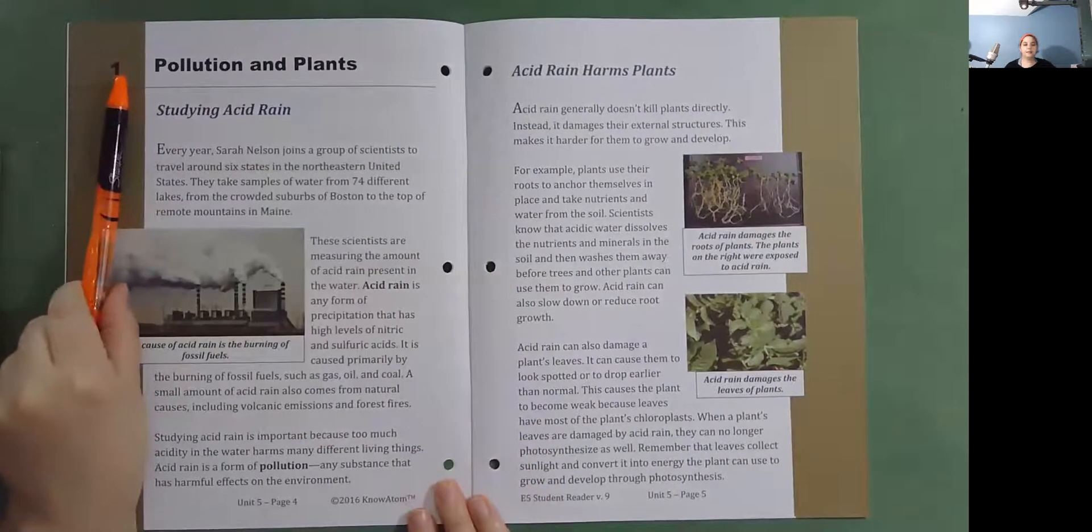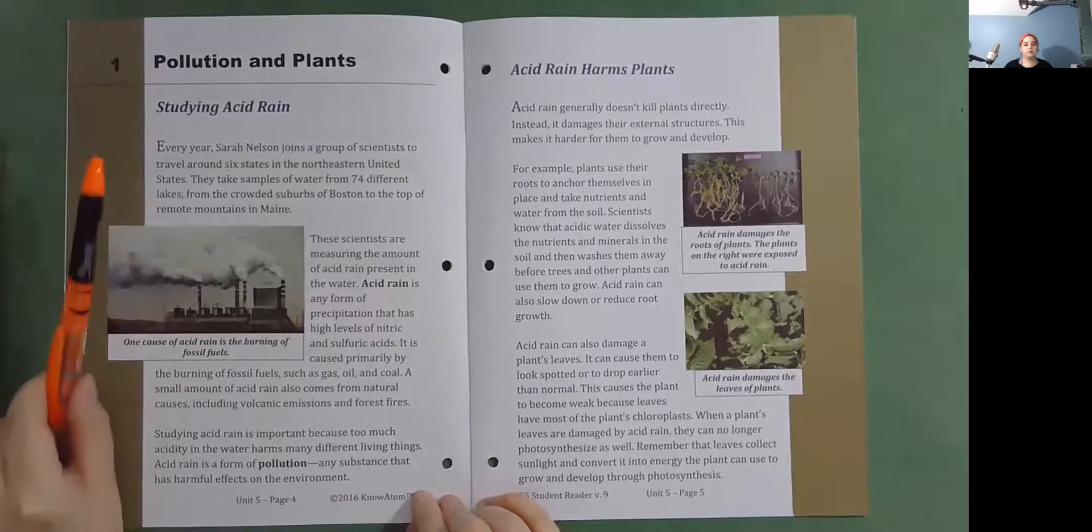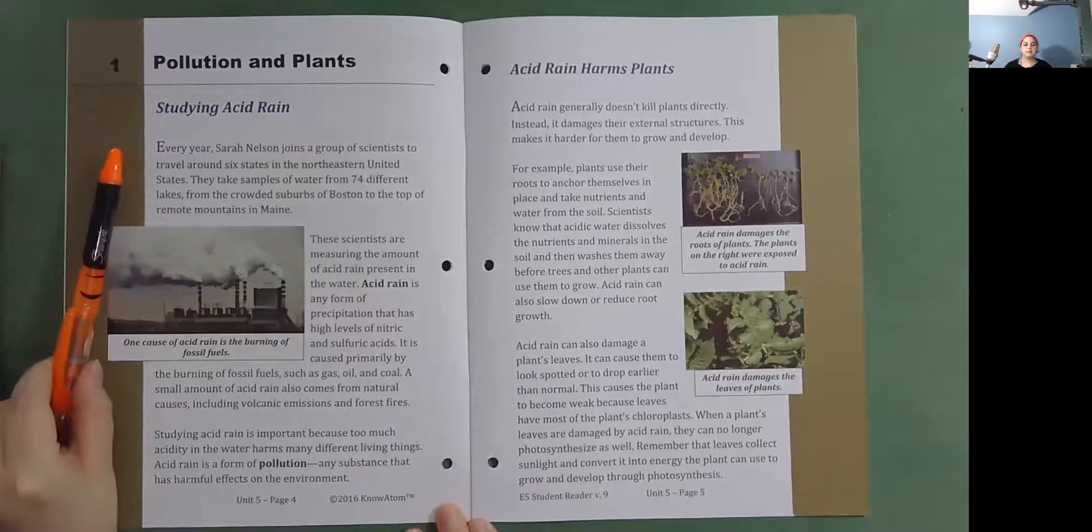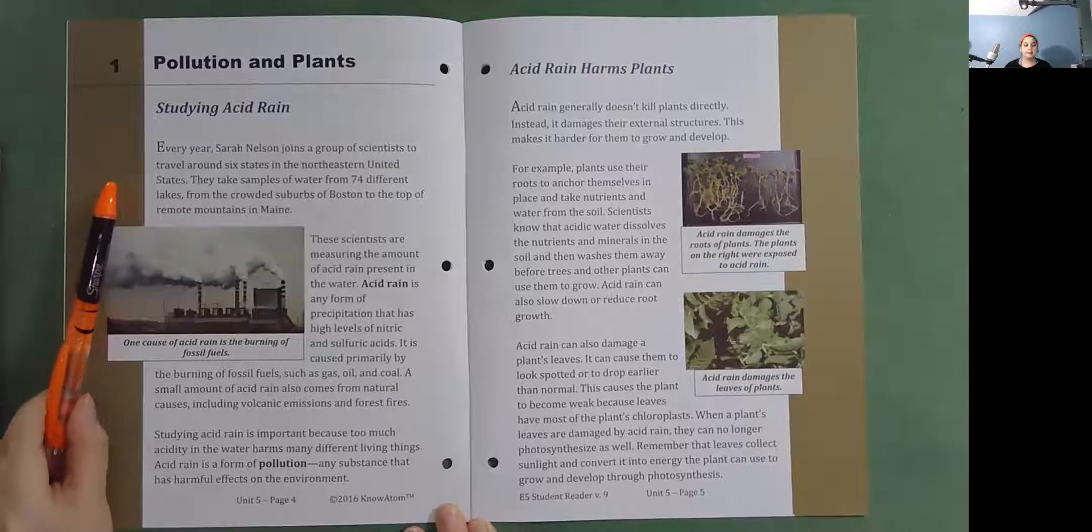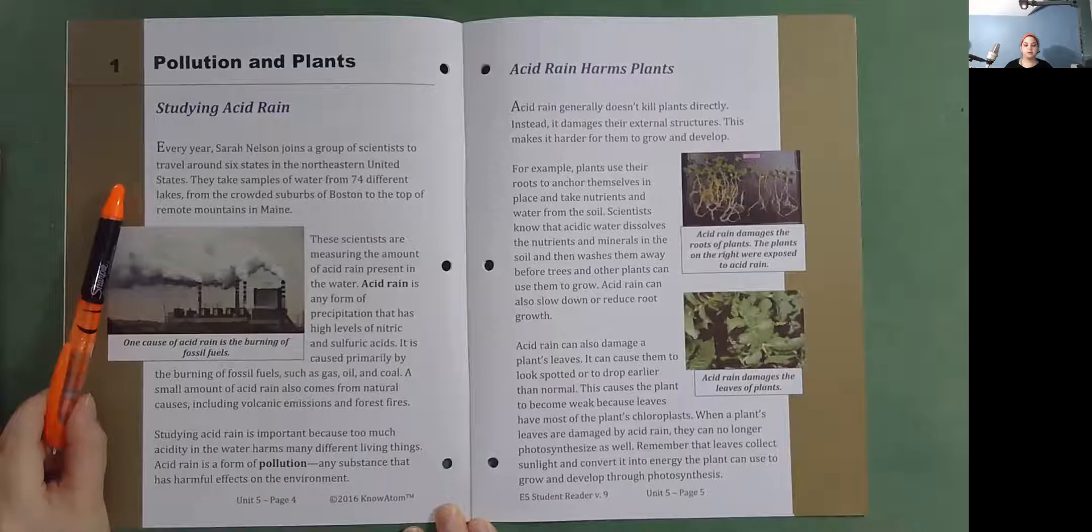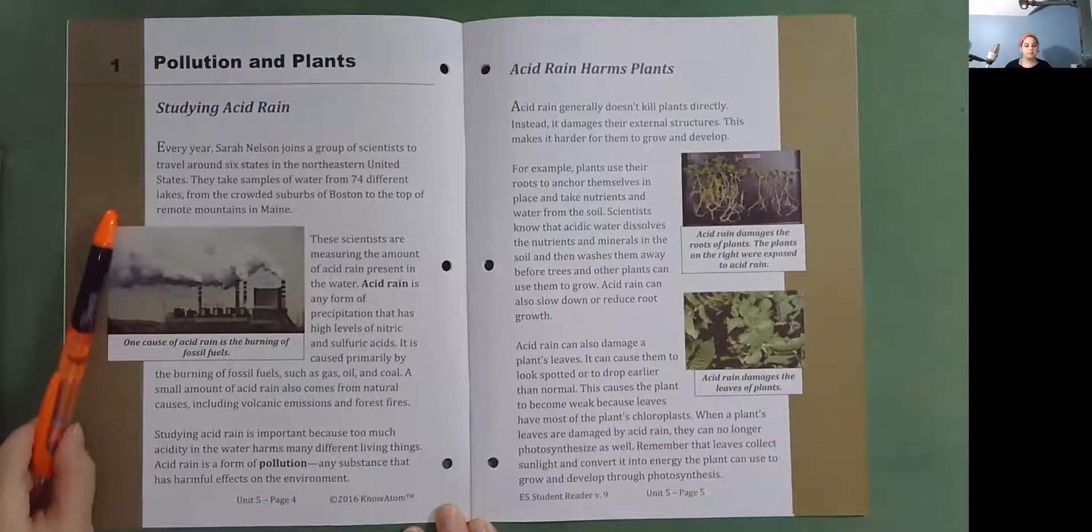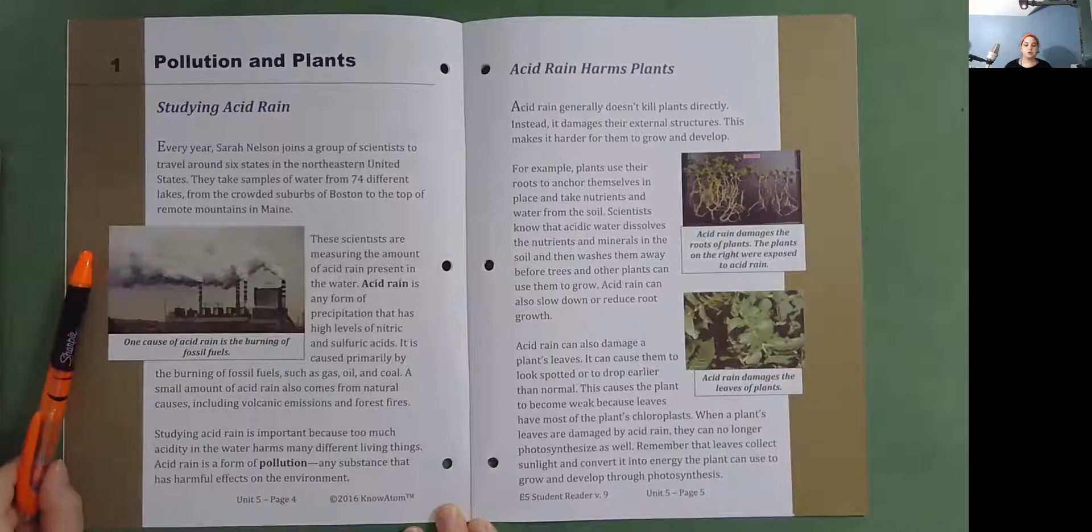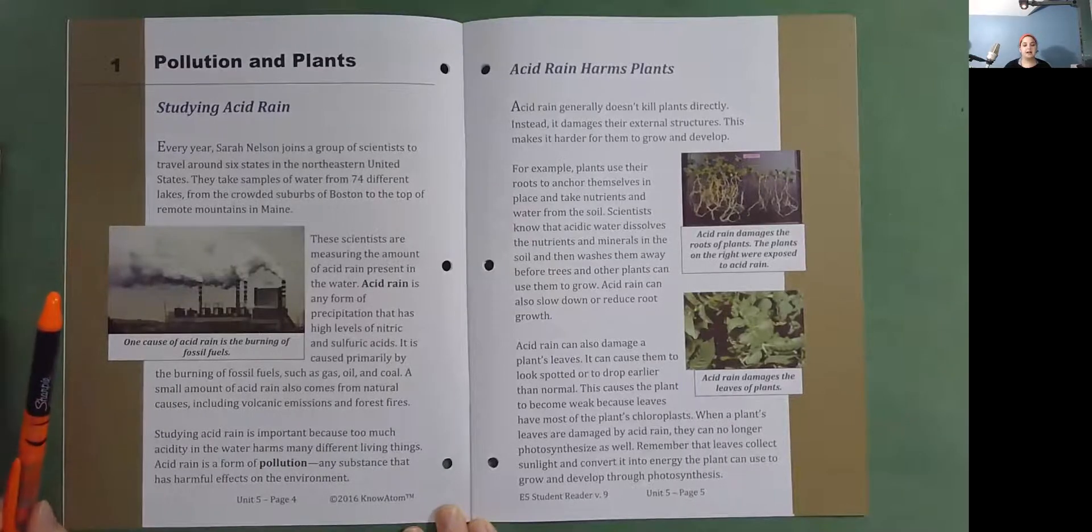Pollution and Plants: Studying Acid Rain. Every year, Sarah Nelson joins a group of scientists to travel around six states in the northeastern United States. They take samples of water from 74 different lakes, from the crowded suburbs of Boston to the top of remote mountains in Maine. These scientists are measuring the amount of acid rain present in the water. Acid rain is any form of precipitation that has high levels of nitric and sulfuric acids.